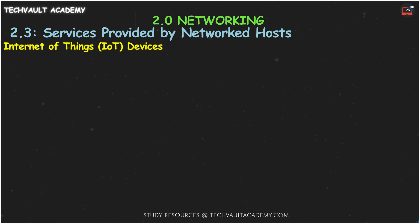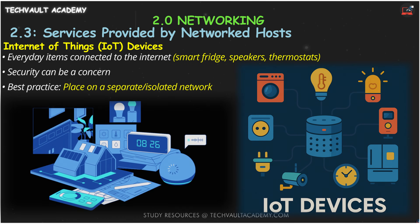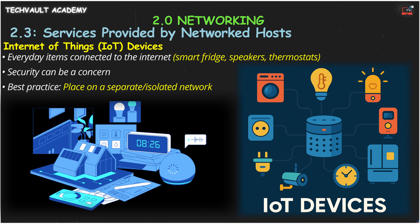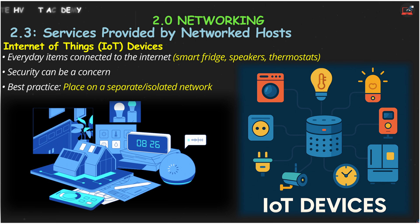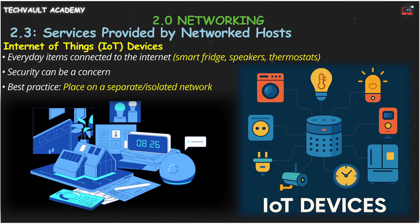And finally, the ever-expanding world of Internet of Things, or IoT devices. These are everyday items now connected to the internet — your smart fridge, speakers, thermostats, and doorbells. While incredibly convenient, the security of these devices can vary. It's a good practice to place IoT devices on their own separate network to protect your main computers and data.